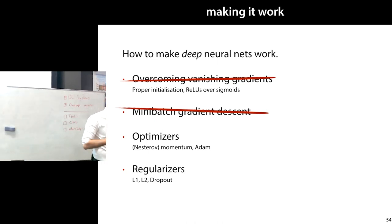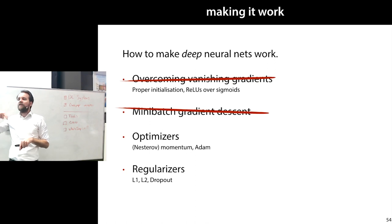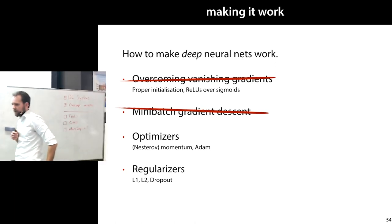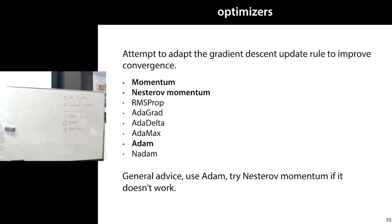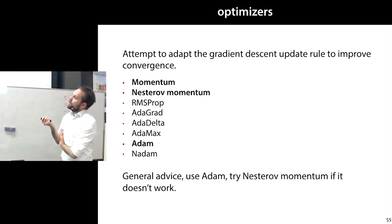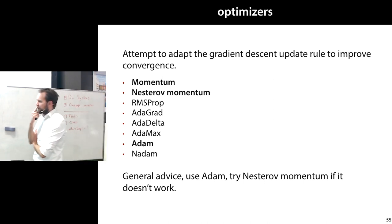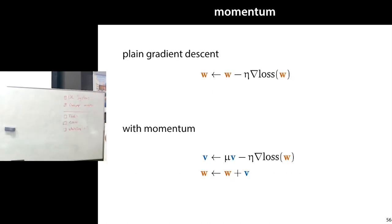Then there's the question of optimizers. We've seen the basic gradient descent update rule: compute the gradient, multiply by a small learning rate, and subtract it from your existing weight values. You can tweak that to get better performance — that's called an optimizer. There are many optimizers, but Adam is basically the standard default choice. There's also momentum and Nesterov momentum, which accumulate past gradients to improve convergence.